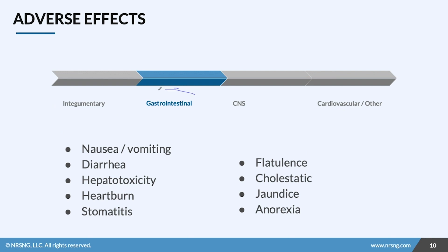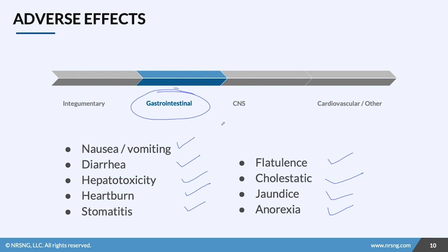Adverse effects of the gastrointestinal system are plentiful. We have nausea and vomiting, diarrhea, liver dysfunction, heartburn, gastric issues, flatulence, gallbladder problems, jaundice, and anorexia. If your patient has a history of gastric dysfunction, this drug is going to exacerbate that already pre-existing condition.